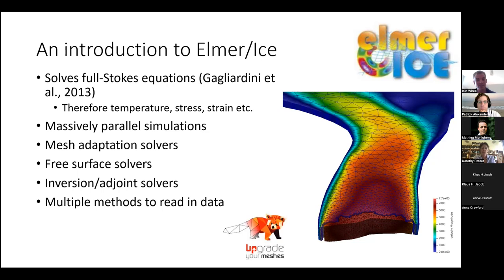Within Elmer, there are a large number of mesh adaptation solvers, free surface solvers, inversion and adjoint solvers, as well as multiple methods to regrid the data.